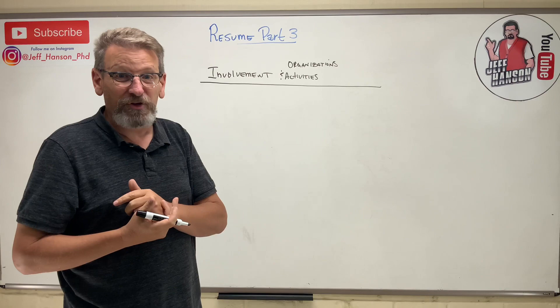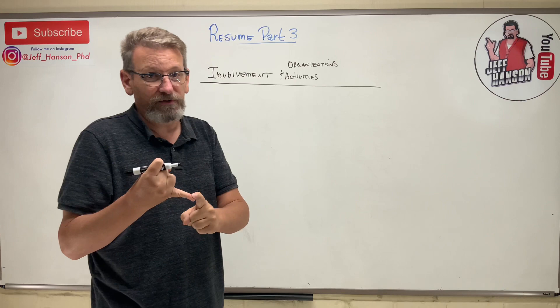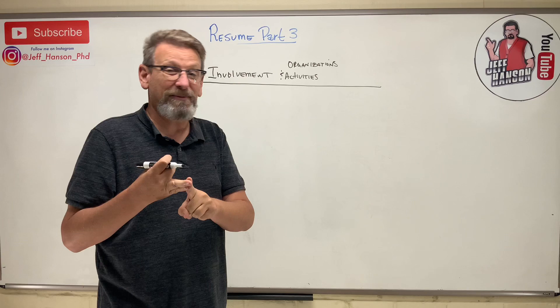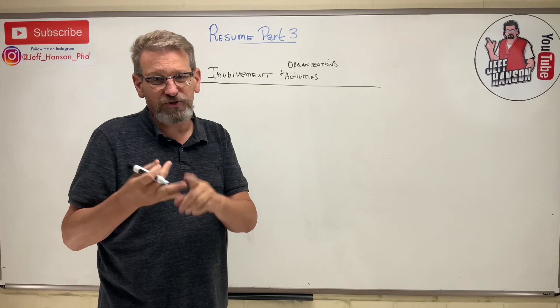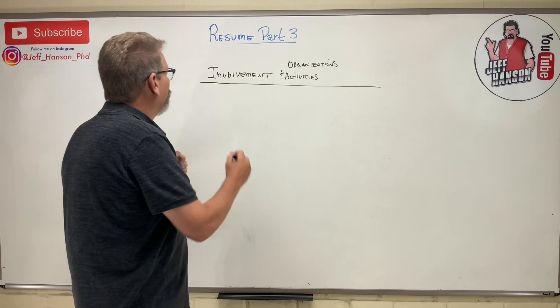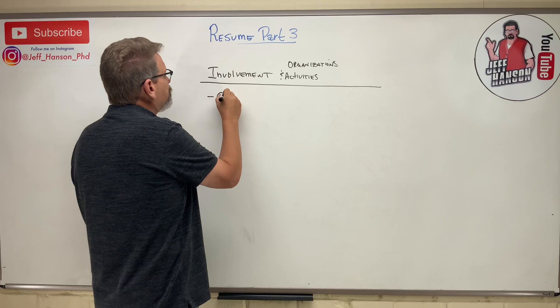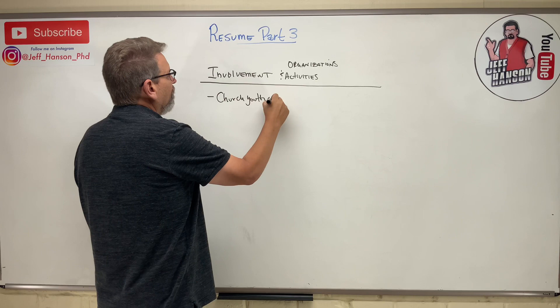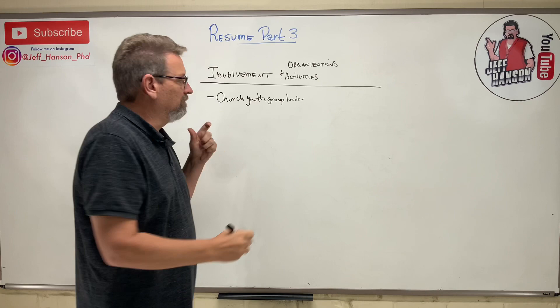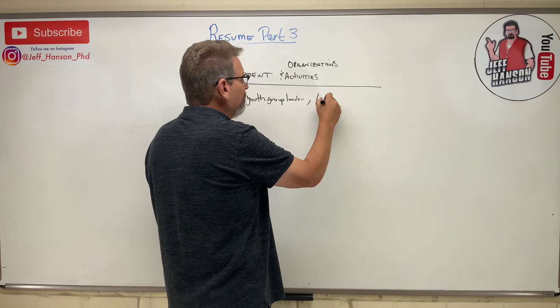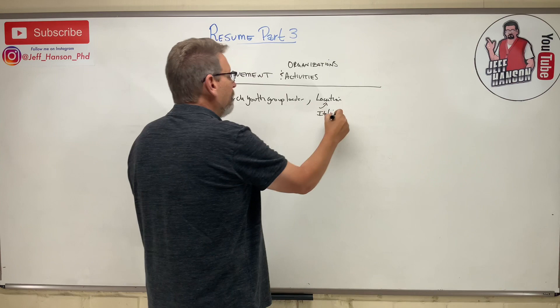If you don't have any involvement or activities, it's time to get involved. That can be school student organizations or local community organizations like Habitat for Humanity, an animal shelter, or volunteering at an elementary school. Just like before, we'll format it the same way — say you're in a church youth group as a leader. You'd put the name of the church, location in italics, bold formatting, and the dates you were involved.